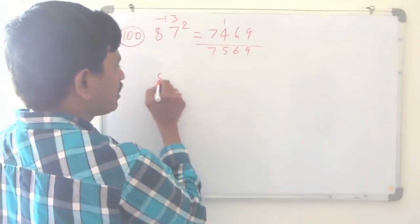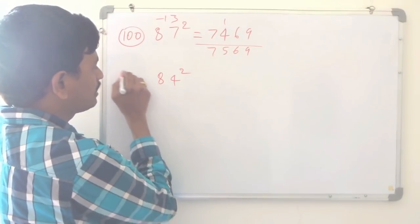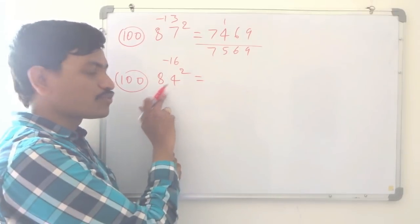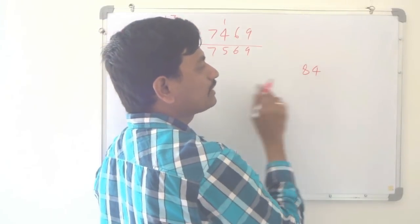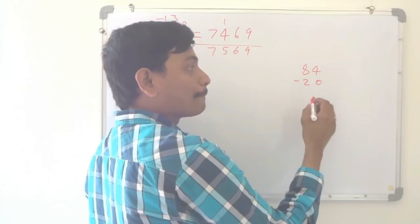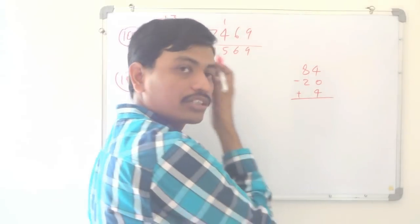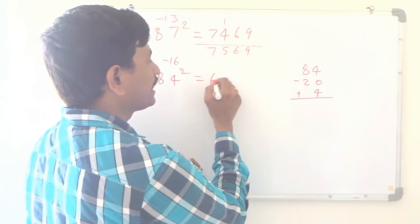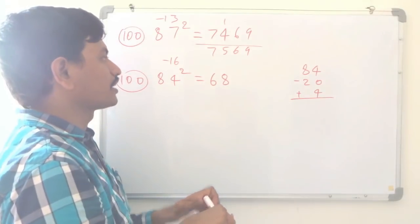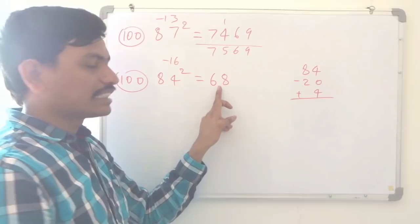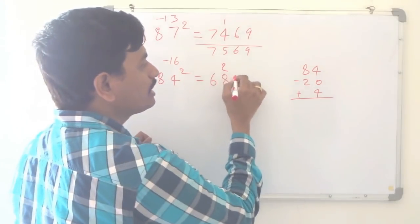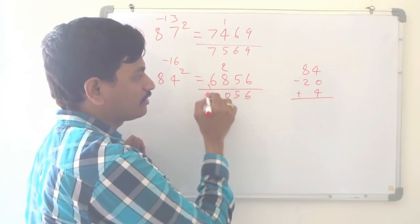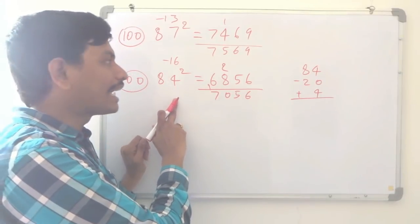Let us take another number: 84 squared. We take 100 as the base. 84 is how much lesser than 100? Minus 16. To subtract 16, I do minus 20 plus 4: 84 minus 20 is 64, plus 4 is 68. And 16 squared is 256; we need 2 digits, so carry the 2: 68 plus 2 is 70, giving 56 as the last two digits. So 7056 is the square of 84.